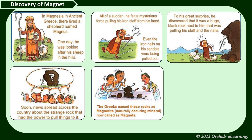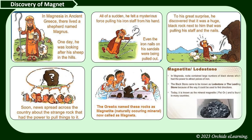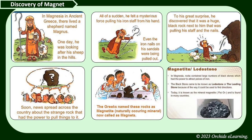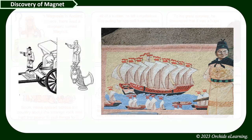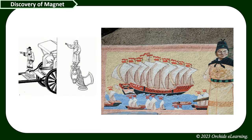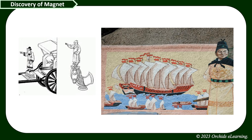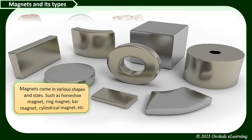Greeks named this strange type of rock magnetite. The Chinese also knew about magnets — ancient Chinese sailors used magnets for navigation. A magnet attracts objects made of certain substances such as iron, cobalt, and nickel.